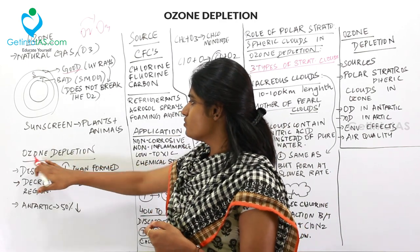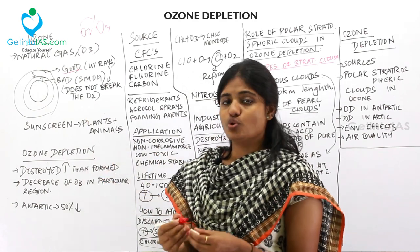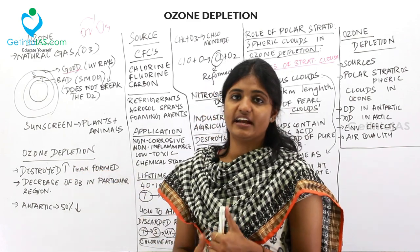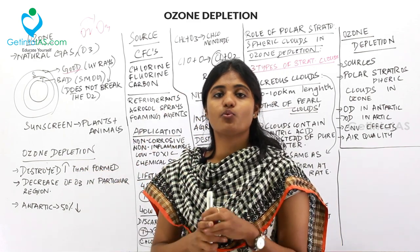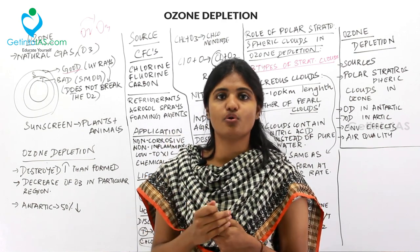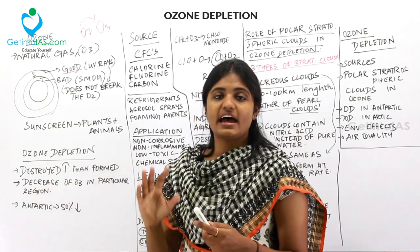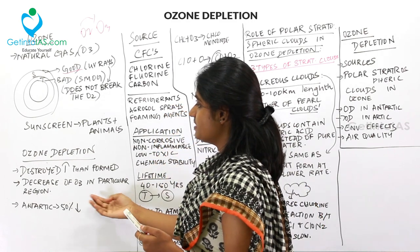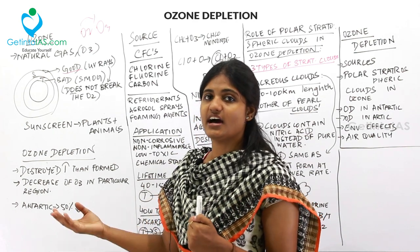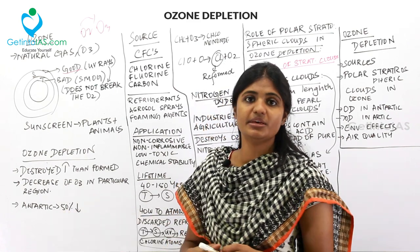What is ozone depletion? The ozone that is destroyed is more than the ozone that is formed — that is, formation is less but destruction is more, causing depletion. This results in a decrease of ozone in a particular region, which is called ozone depletion. Mainly in the Antarctic, that is the South Pole, the ozone has been depleted by more than 50 percent.